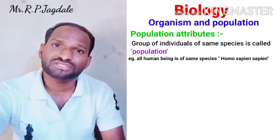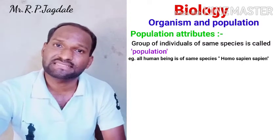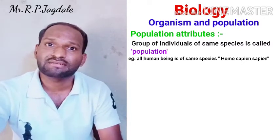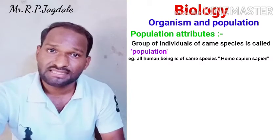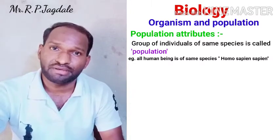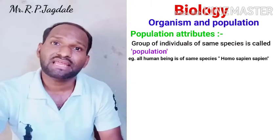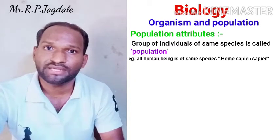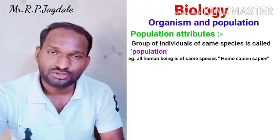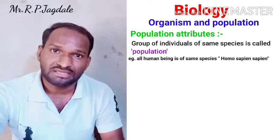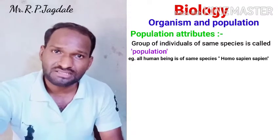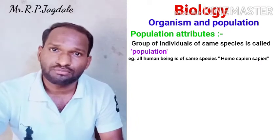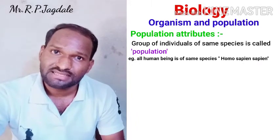So how does population census take place? We are going to see population attributes. In other animals such as tigers, and in other animals and plants also, we generally take a census. We are taking the example of human beings to understand easily.